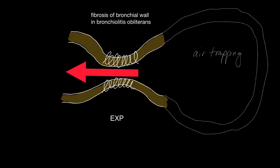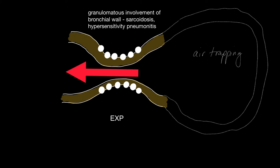Air trapping can also be seen in the fibrosis of the wall in bronchiolitis obliterans. Granulomatous involvement of the bronchial wall, as seen in sarcoidosis and hypersensitivity pneumonitis, can lead to thickening of the bronchial wall and narrowing during expiration, leading to air trapping. This is the classical radiological finding in hypersensitivity pneumonitis.